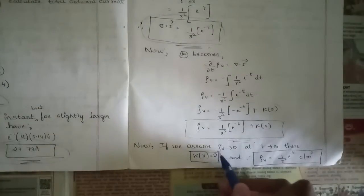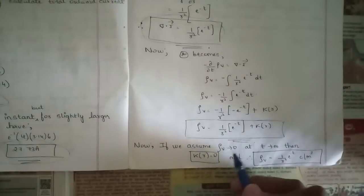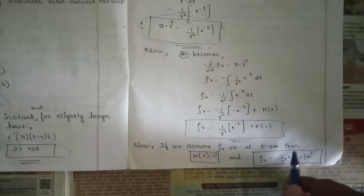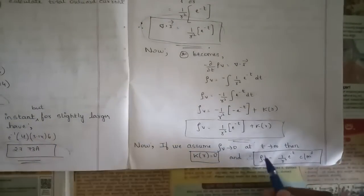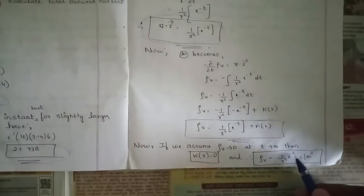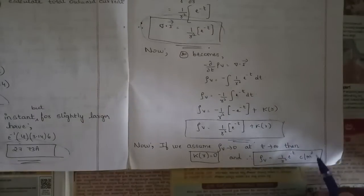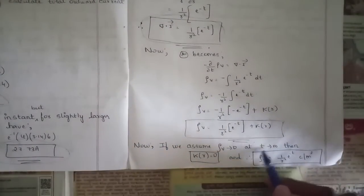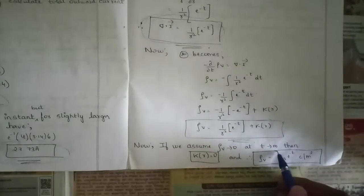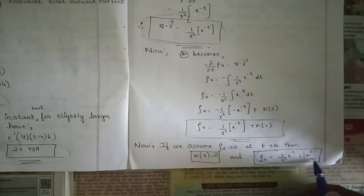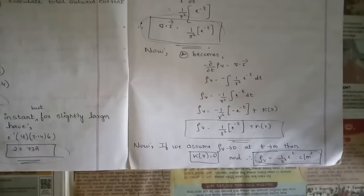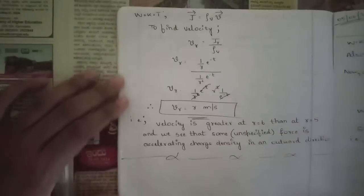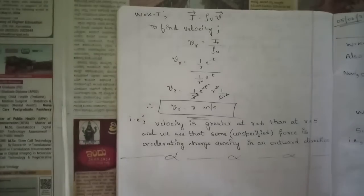Assuming volume charge density rho_V tends to zero as t tends to infinity, the constant k(r) equals zero. Therefore rho_V = (1/r²)·e^(-t) coulombs per cubic meter. This is the value of volume charge density we obtain under the given boundary condition.